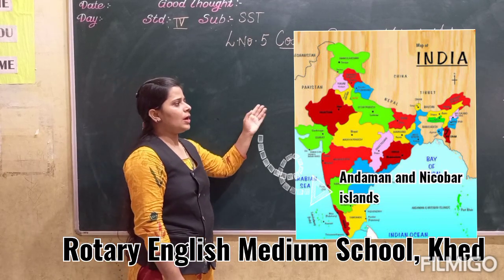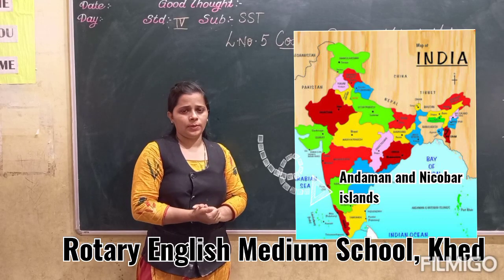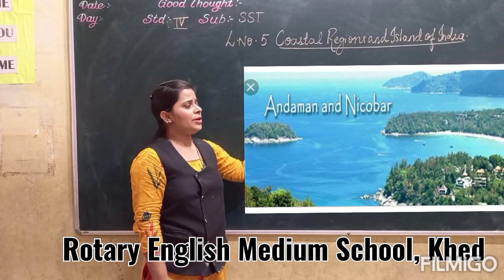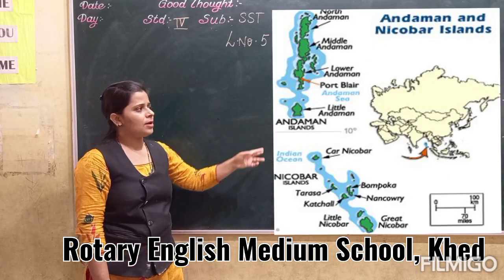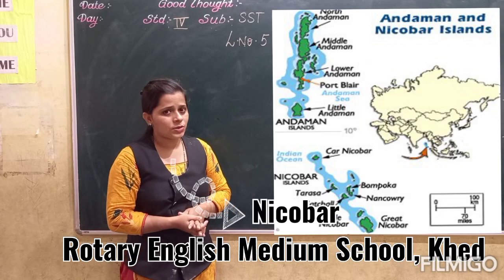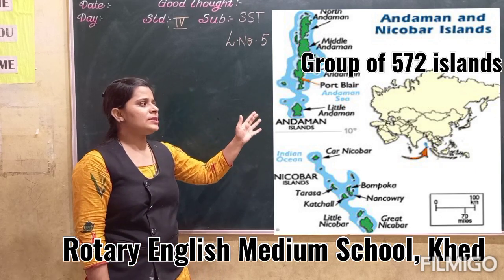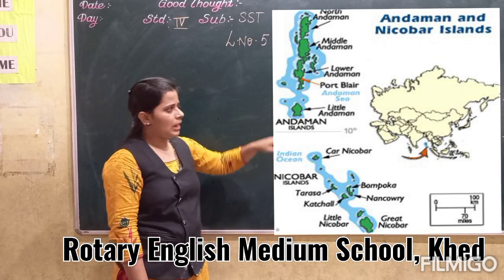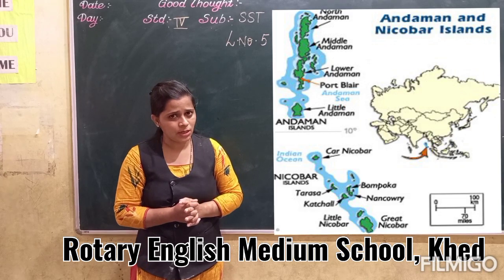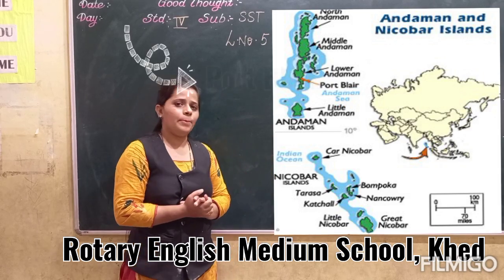Andaman and Nicobar islands are located in the Bay of Bengal. It is a group of 572 islands, which can be divided into two main island groups — Andaman in the north and Nicobar in the south. The capital of Andaman and Nicobar is Port Blair.